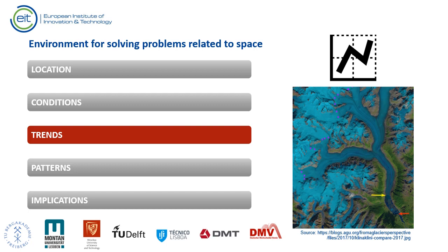If we have observations that span a certain period, we can try to identify and analyze trends that occur in a given space over time. Examples include population growth, bird migration, glacier retreat, annual temperature change, house price fluctuations, mine subsidence, air pollution, and many other processes and phenomena that can be related to geographical space.